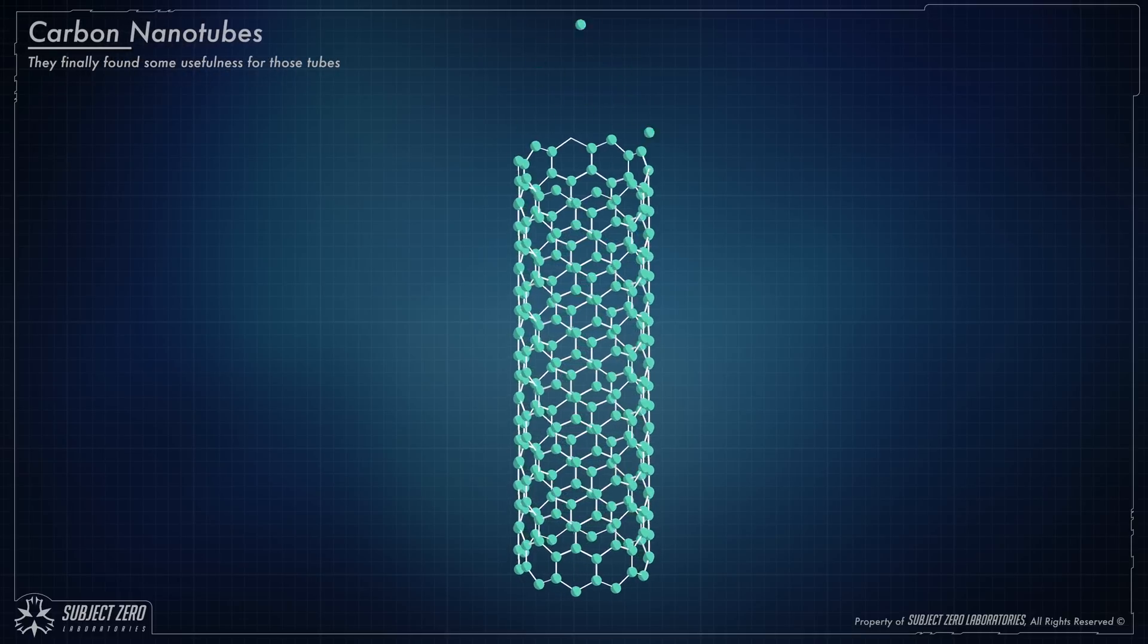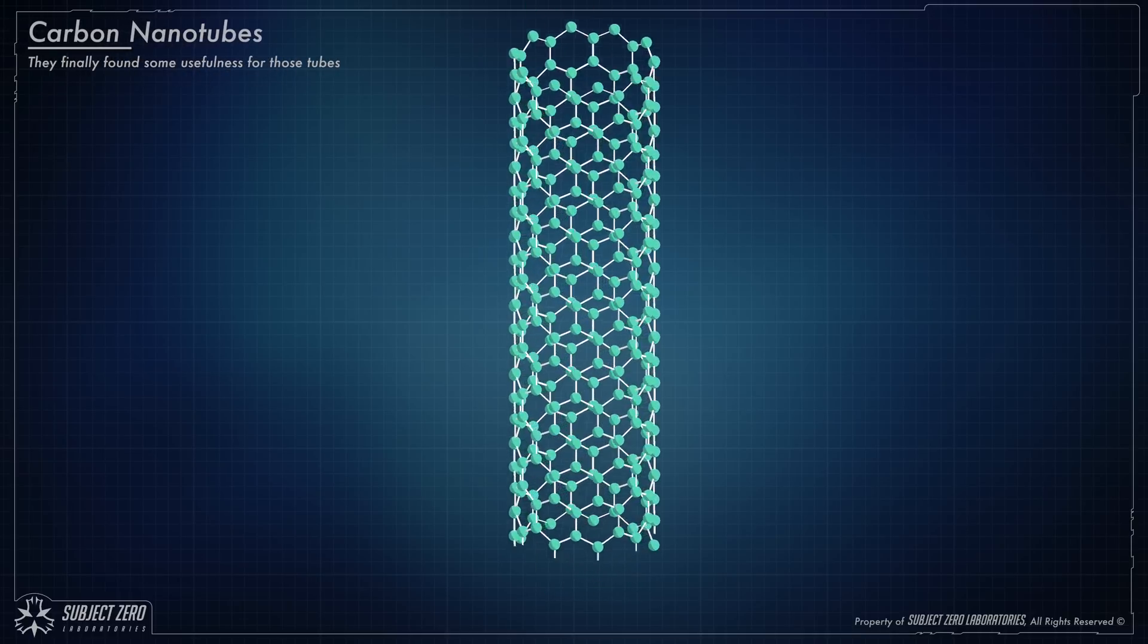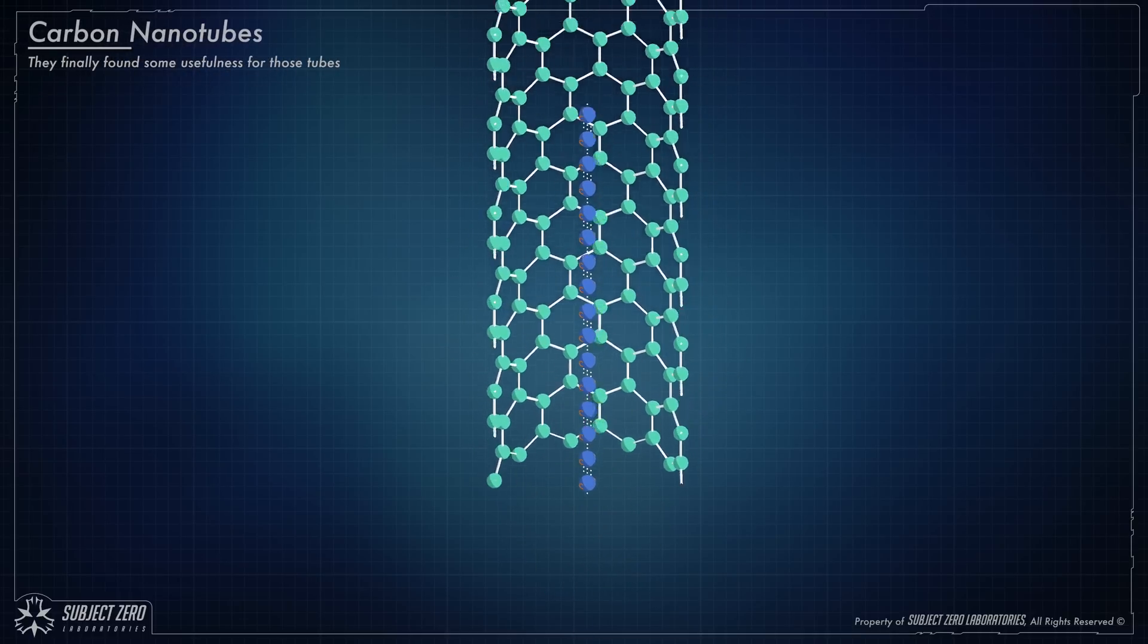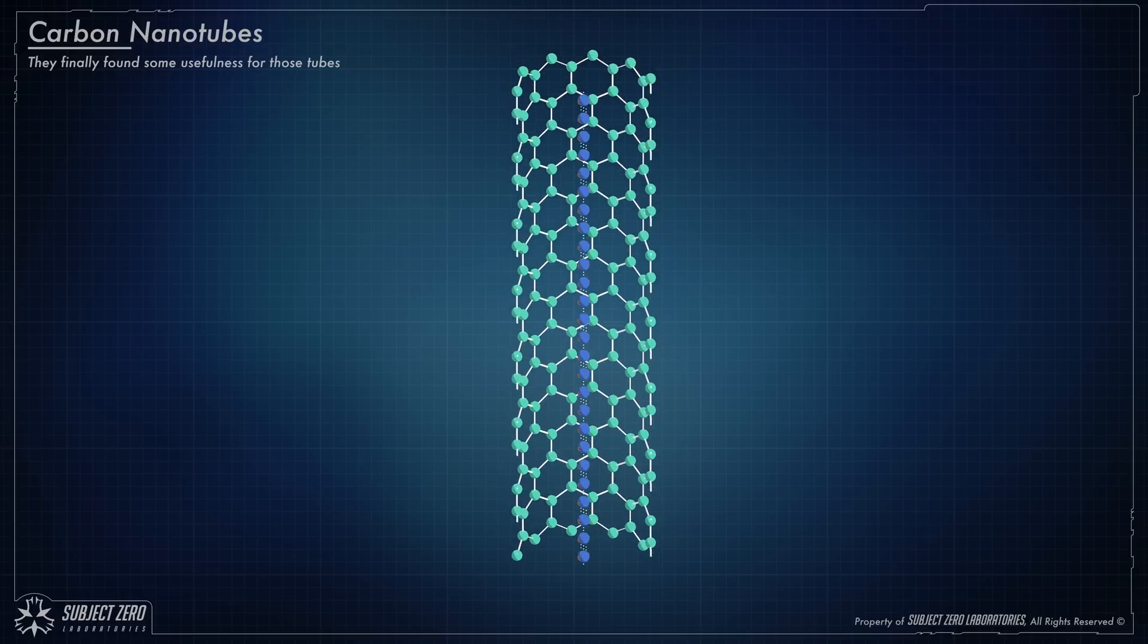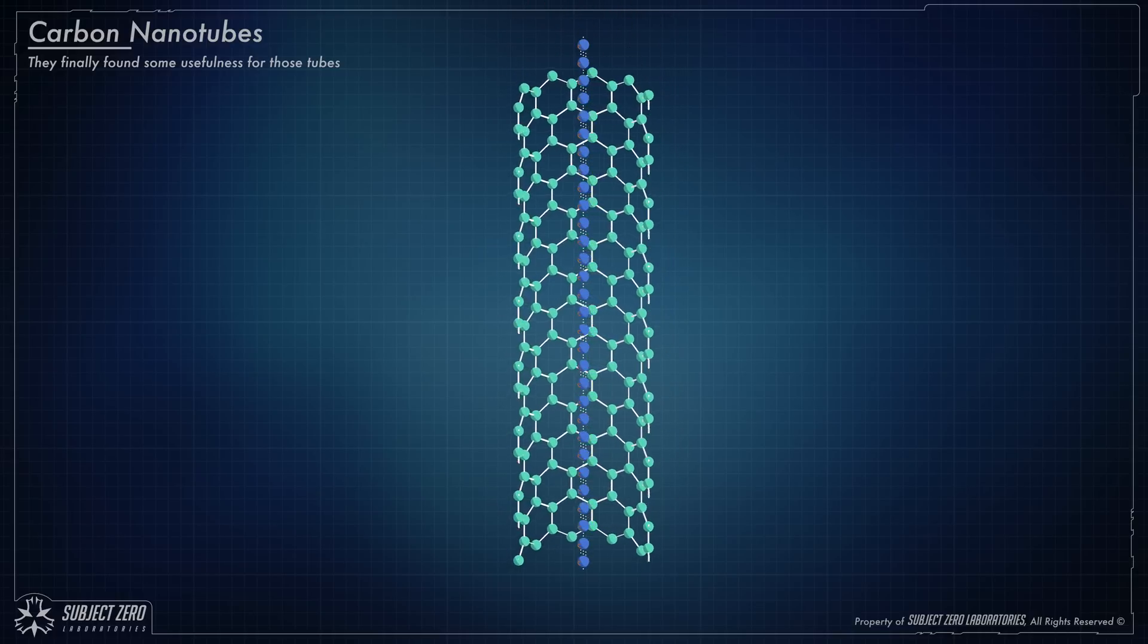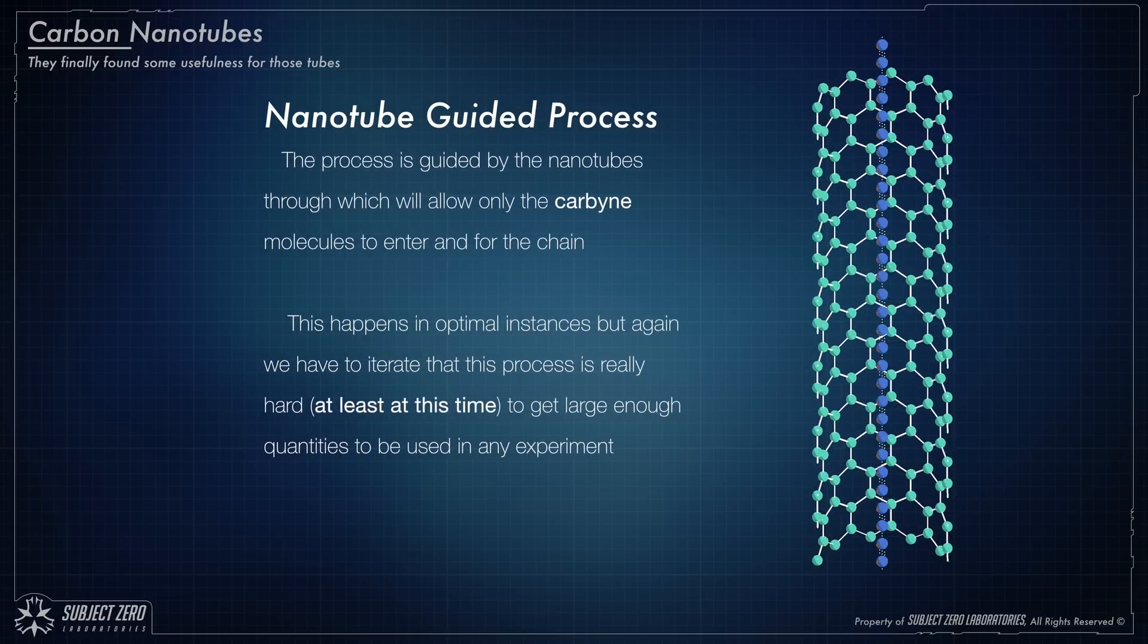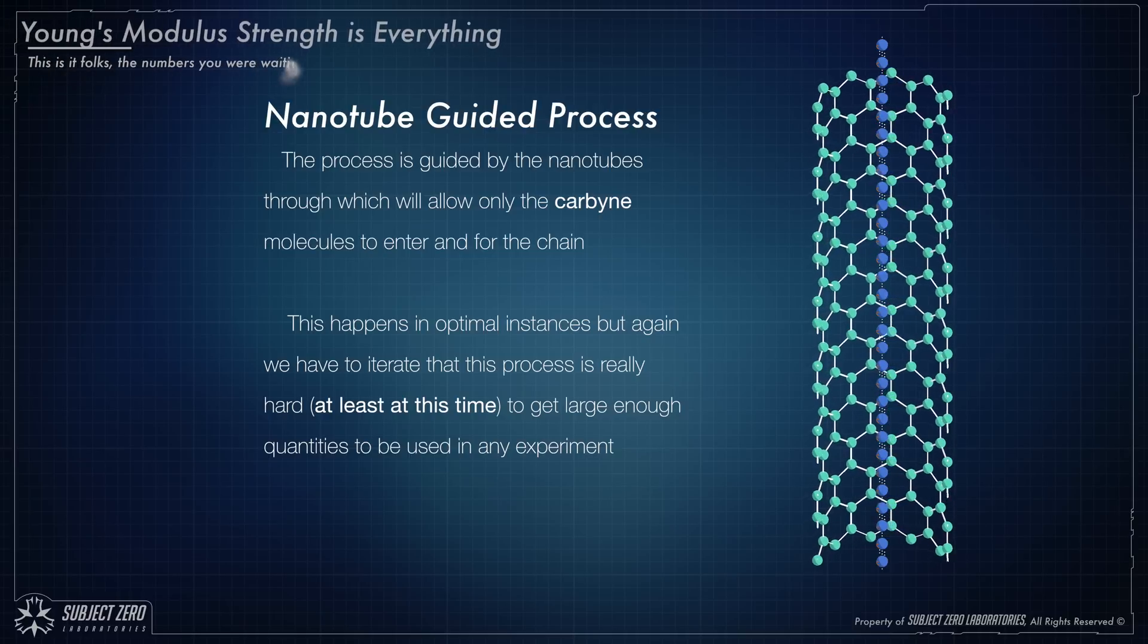The idea here was pretty simple. They only used carbon nanotubes to guide the process of creating the chain, sort of in the same process of the chemical vapor deposit. But the problem is that it limits the chain size, meaning that by the end of the process, you're gonna get a chain that is only a hundred or maybe a thousand carbon atoms. And as we know, this is not enough to make any conclusions.